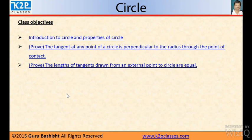Class objectives: introduction to circle and properties of circle. To prove two theorems. First one is the tangent at any point of a circle is perpendicular to the radius through the point of contact, and the second one is the length of tangents drawn from the external point to circle are equal.